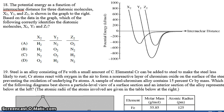This is the case with number 18. The potential energy as a function of internuclear distance, the distance between the two nuclei of two atoms, for three diatomic molecules X2, Y2, and Z2 is shown in the graph to the right. Based on the data in the graph, which of the following correctly identifies molecules X2, Y2, and Z2? The three possibilities are oxygen, nitrogen, and hydrogen.